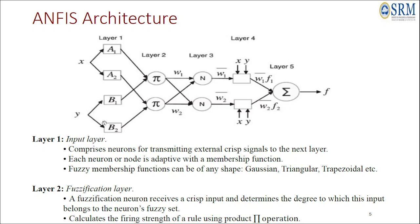Mu is the membership value associated with the respective inputs X and Y at these neurons. From layer 2 we have the fuzzified input — the input that was passed here was a crisp input, and we get a fuzzified output, associated with weight W1 from one neuron and W2 from the other.